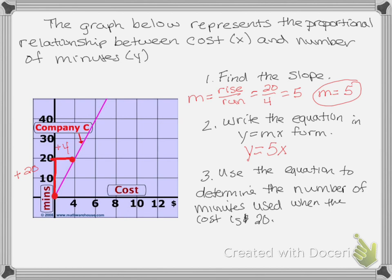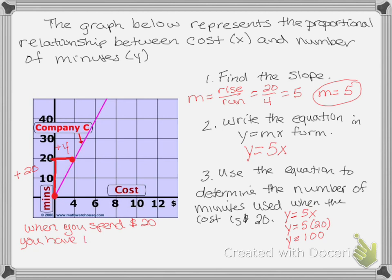So the number 20 is going to go in place of x. Our equation was y equals 5x, so y equals 5 times 20. Y represents the total minutes used. 5 times 20 is 100. So when you spend $20, you have used 100 minutes.